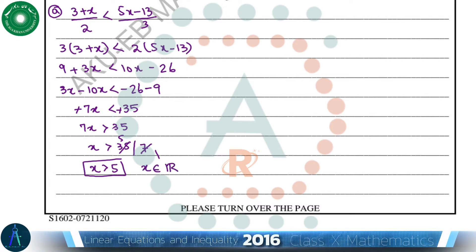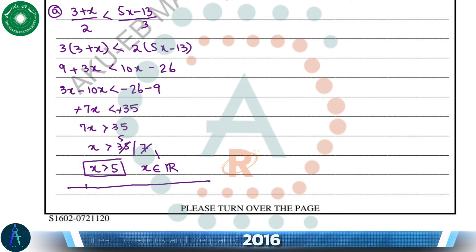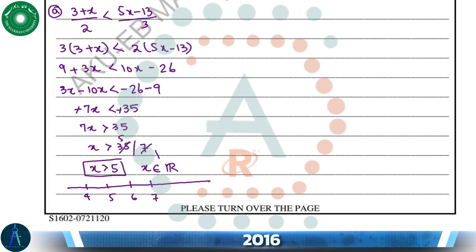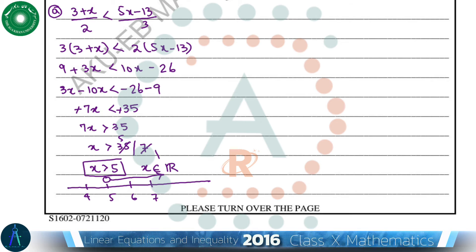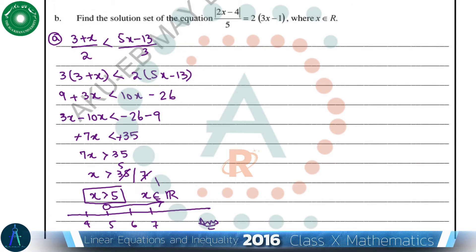All the real numbers greater than 5 will form the solution set of this inequality. To represent on a number line: this is 4, this is 5, this is 6, and this is 7. The number line will be formed with a circle on 5 and an arrow that represents the right side. This is the answer of part a. Now we will solve part b of this question.